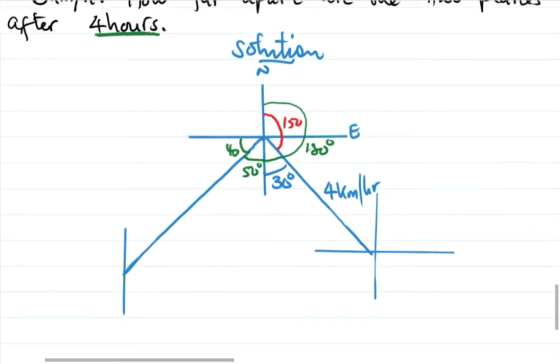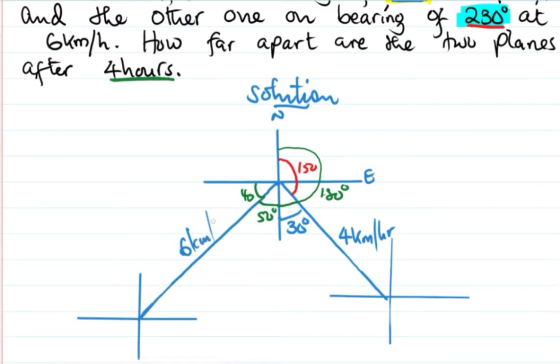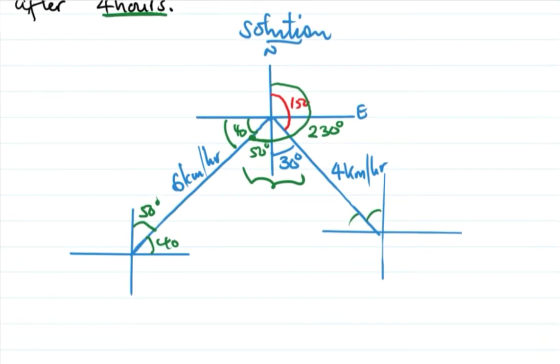This one flies at six kilometers per hour. So we have this one as the plane. That's 230 degrees. We can get 40 degrees, we can get 50 degrees. The angle of interest is between the two lines.